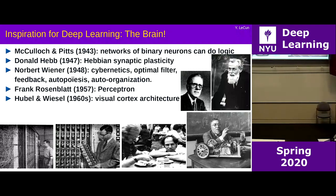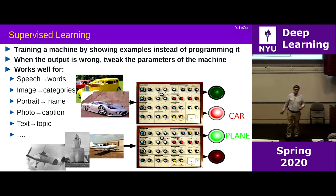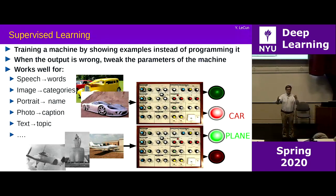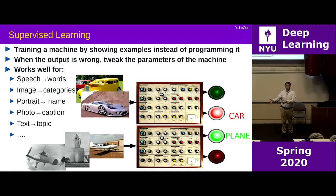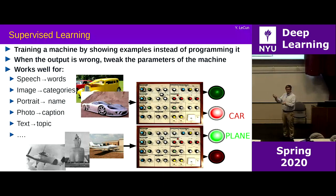Supervised learning is what the vast majority — something like 90-plus percent — of deep learning applications use. It's the process by which you collect pairs of inputs and outputs: images with category labels, audio clips with text transcriptions, text in one language with translations. You feed an example to the machine; if the output is correct you don't do much, if incorrect you tweak the parameters so the output gets closer to the desired one.